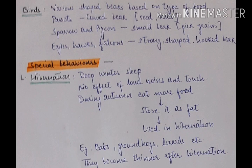Eagles, hawks, and falcons have very strong, sharp, hooked beaks — they are carnivorous birds. They need to eat and tear flesh, so they have a very strong hooked beak. Remember, birds are a class of animals.